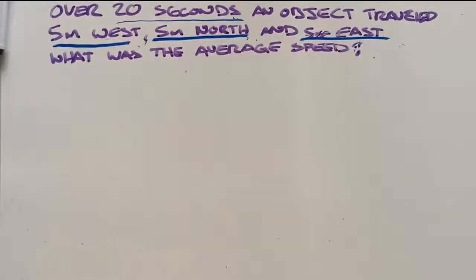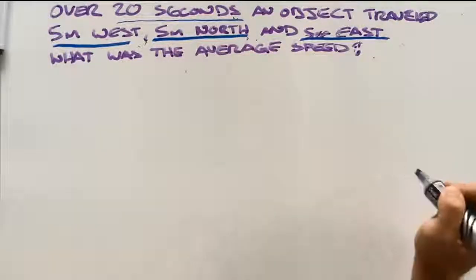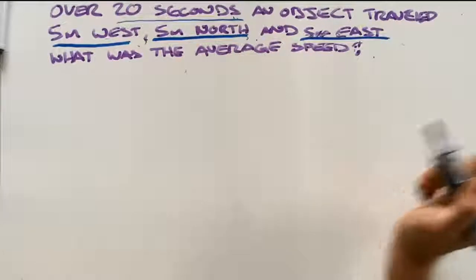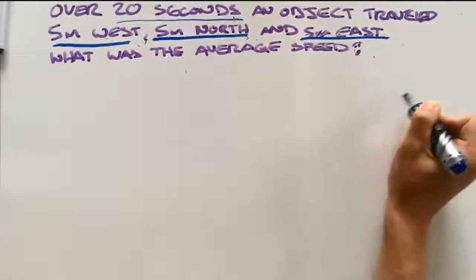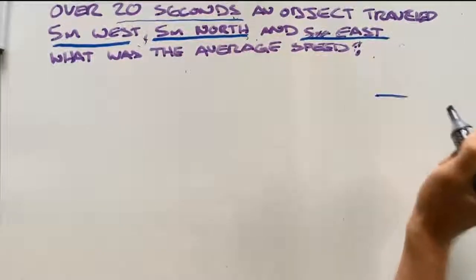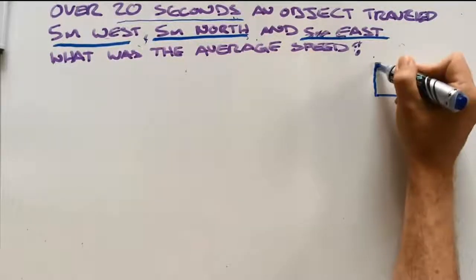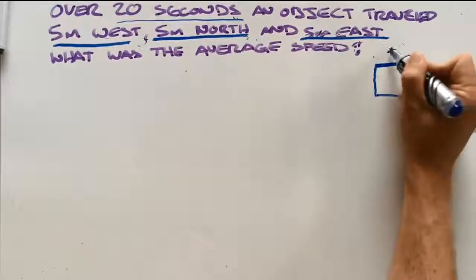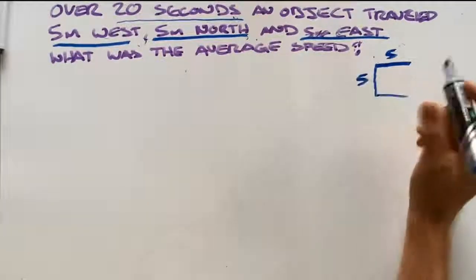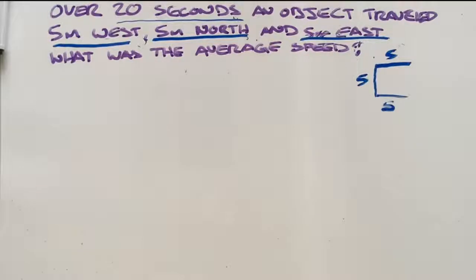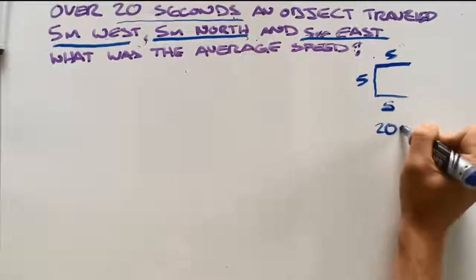Now that we've done this, we can create a little key that helps us understand the problem. The object travelled 5 metres west, 5 metres north, 5 metres east, and this took us 20 seconds.